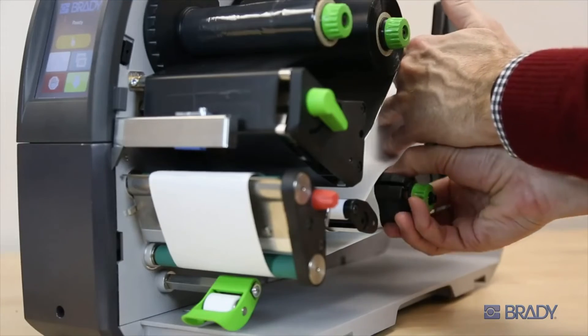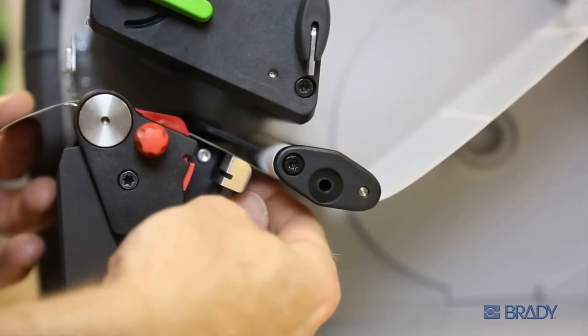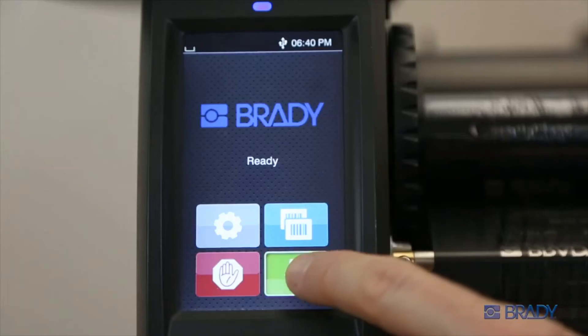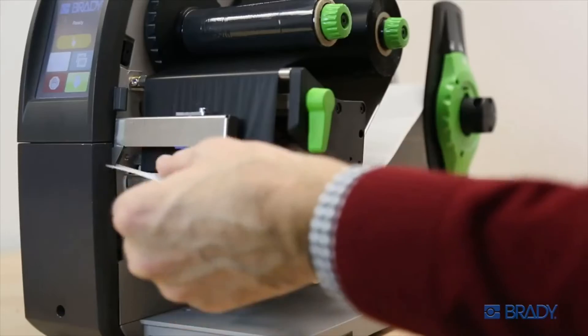Now tighten the media to remove slack and close the pinch roller. Adjust the sensor if needed. Then close your print head and hit the green arrow button on the screen to calibrate.